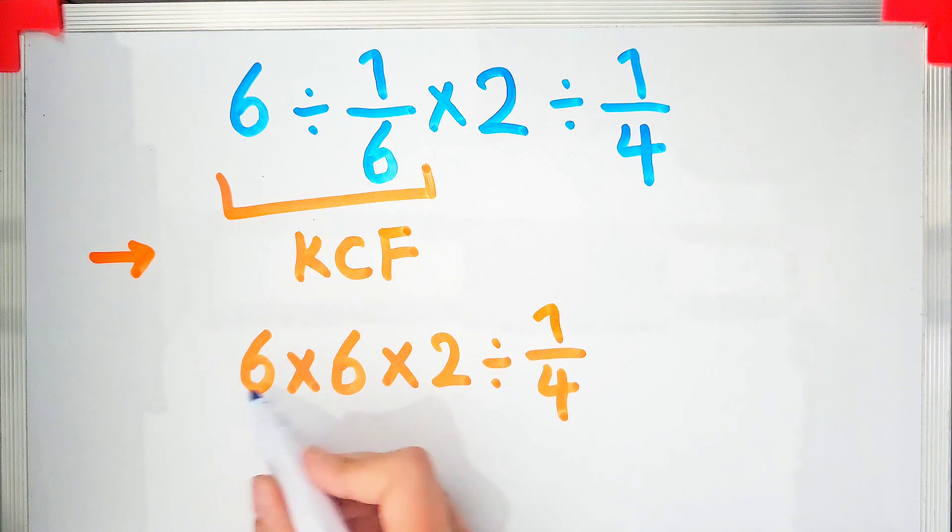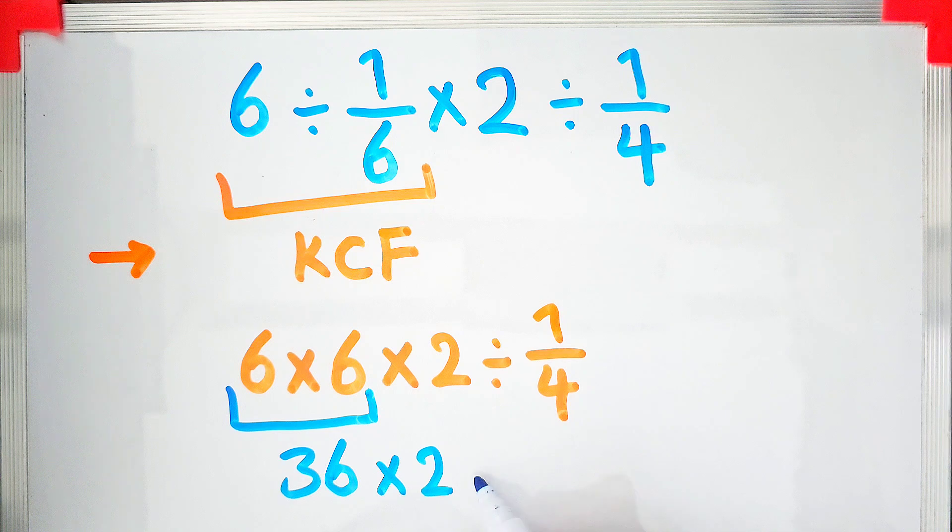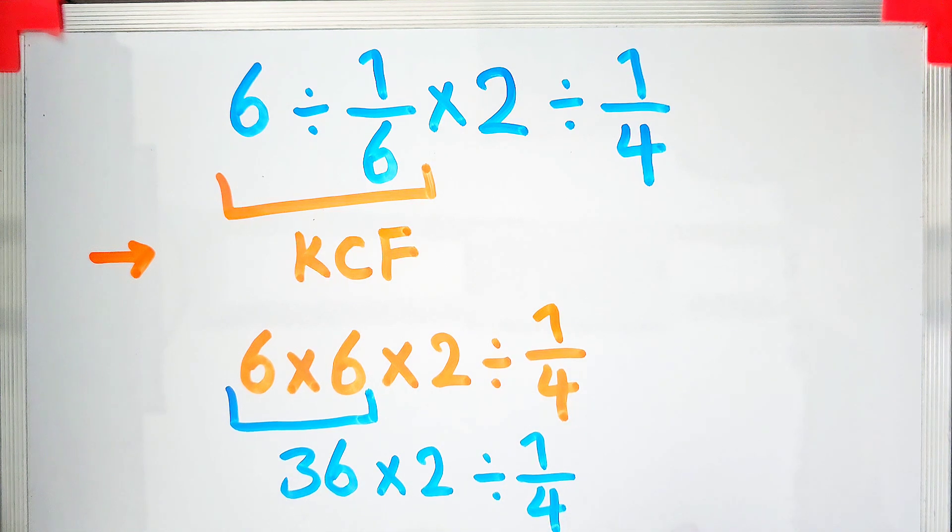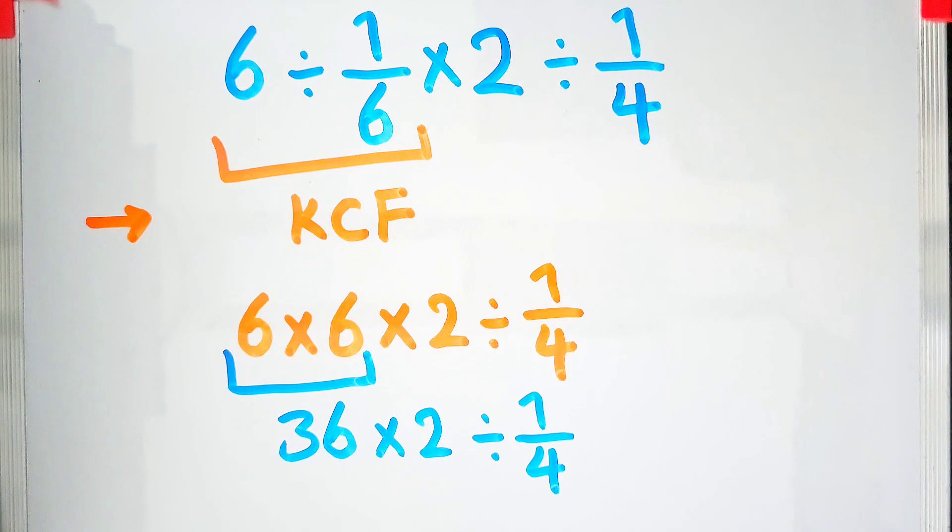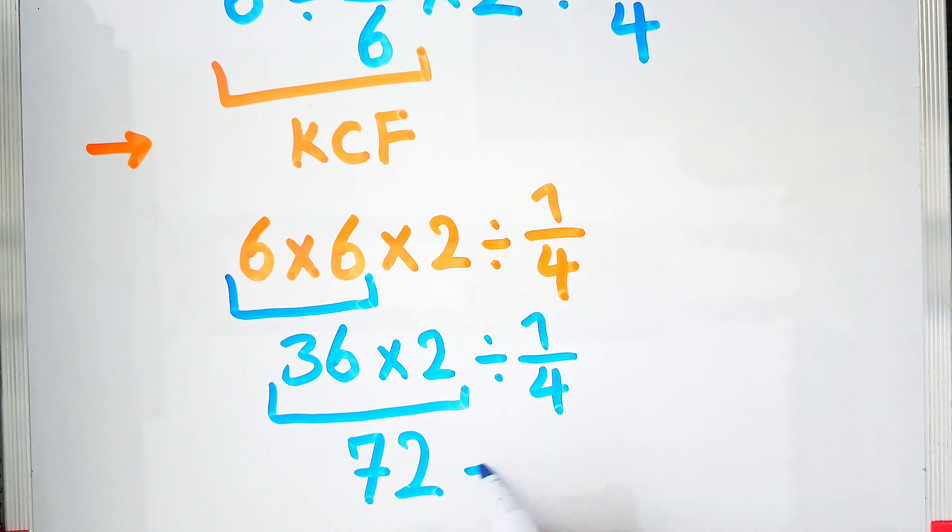We do multiplication and simplify: six times six equals thirty-six. Thirty-six times two divided by one fourth. Now again we do multiplication at the first part: thirty-six times two equals seventy-two. And again we use the KCF rule.